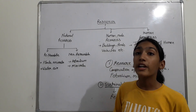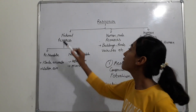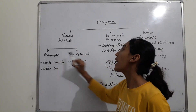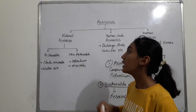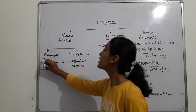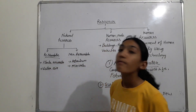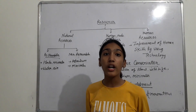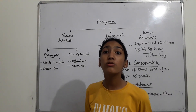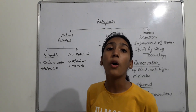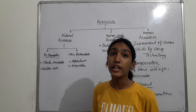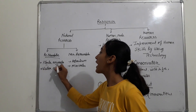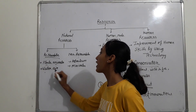Natural resources have two types: renewable and non-renewable. Renewable resources are those which have non-limited stock and can be obtained again and again, like plants, animals, water, and air.